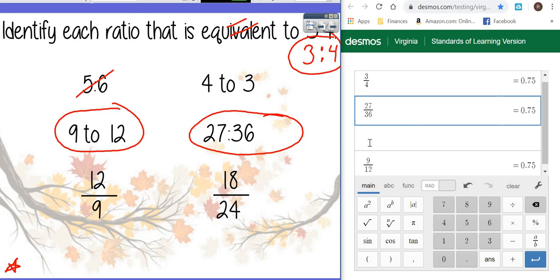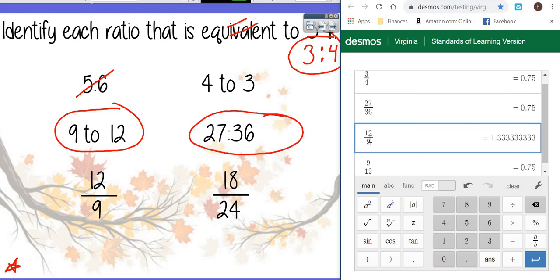So 9 over 12 worked, so I really doubt 12 over 9 is going to work. Nope, it sure did not. So we're going to come over here and mark that one out as well. And let's try the very last one.